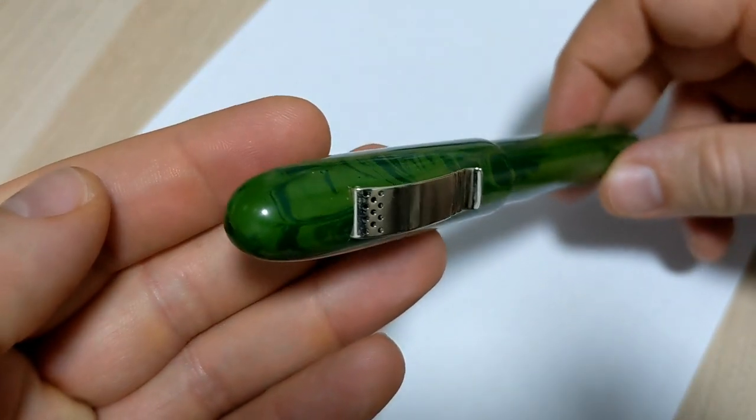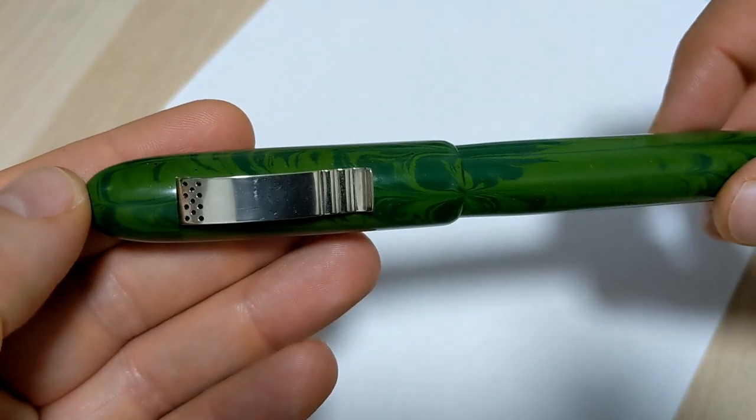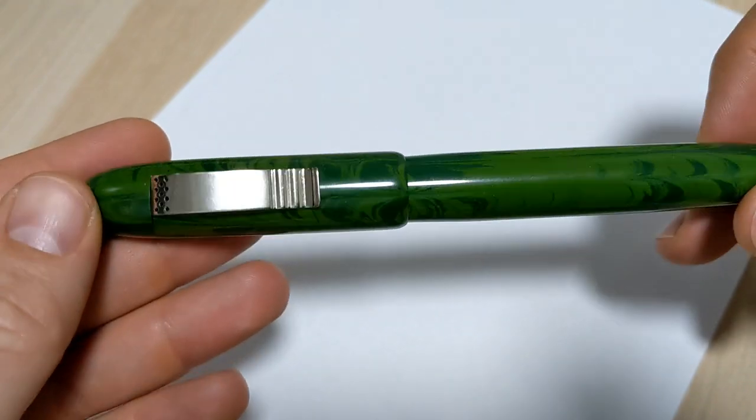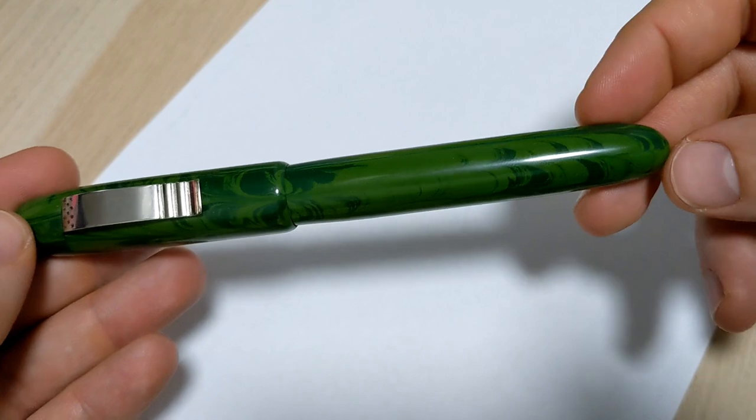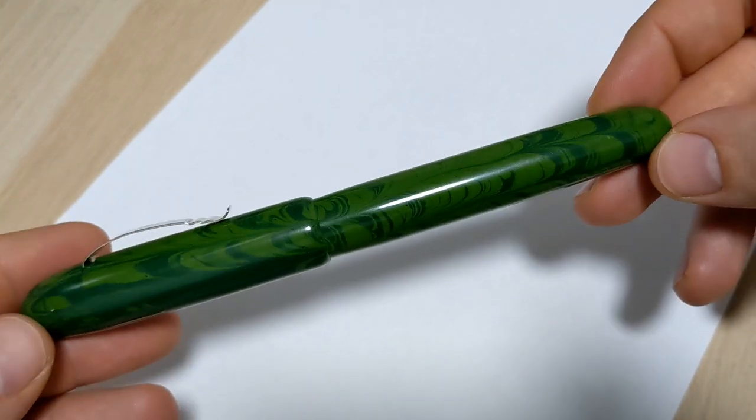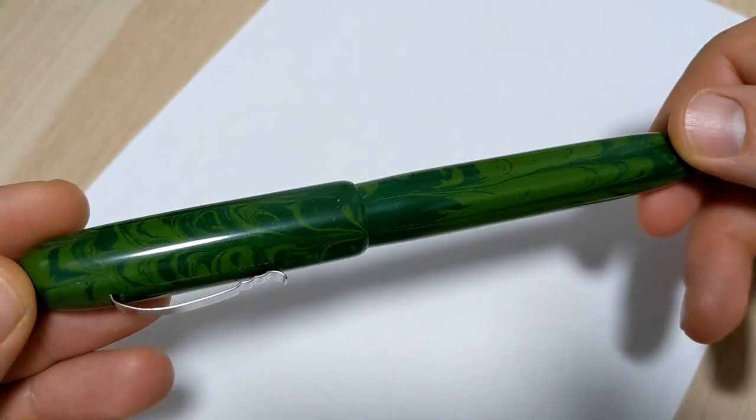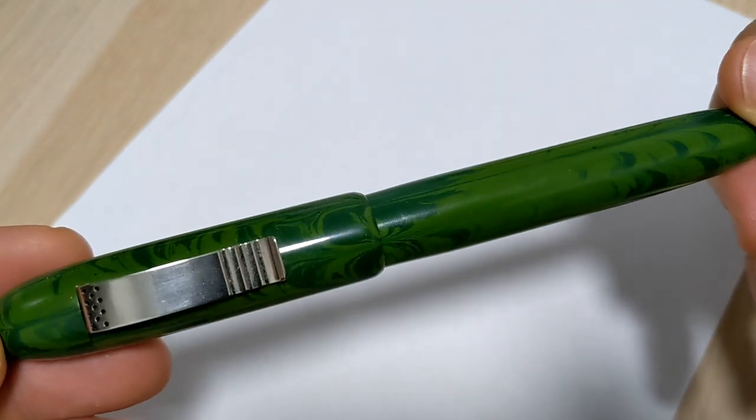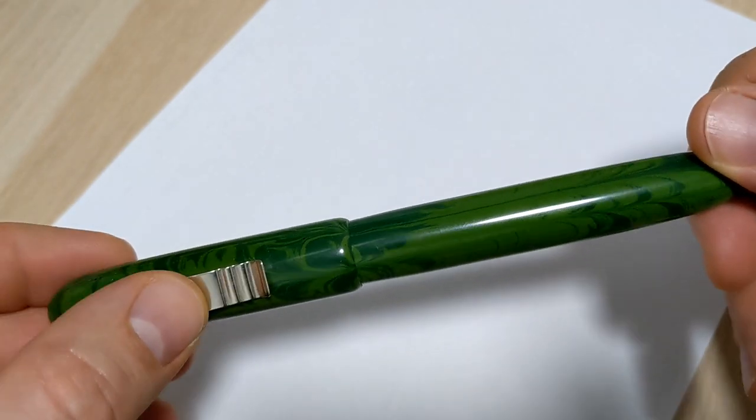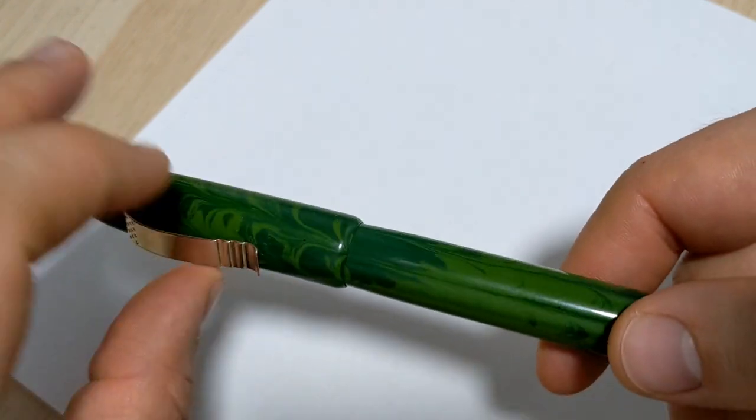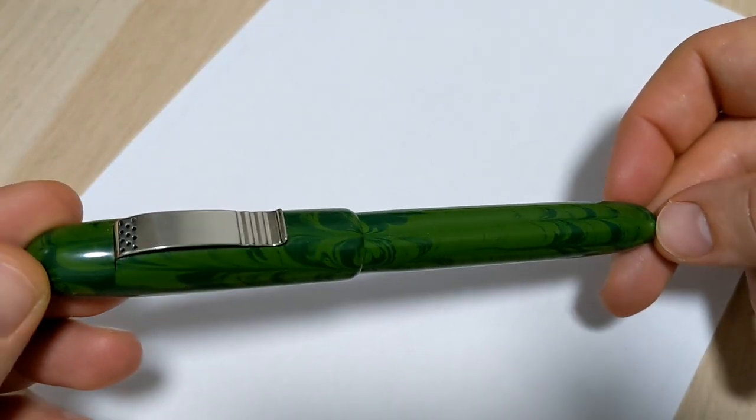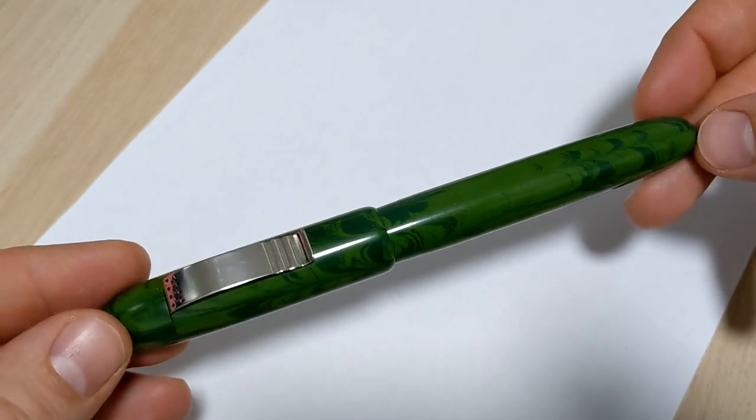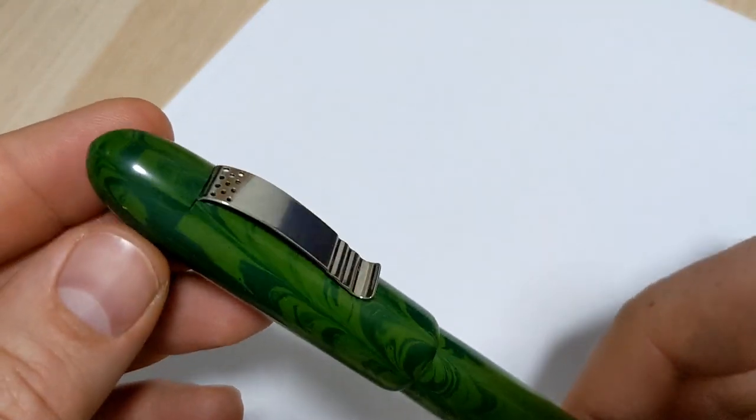So here we go, Kiwi Pens - this is their Jumbo and they mean jumbo. If it said oversized that would not be an accurate description. This is freaking huge. Beautiful green ebonite, two-tone green, super thick white clip. It suits the pen. It's pretty stiff, I don't know what shirt pocket you would fit this into.